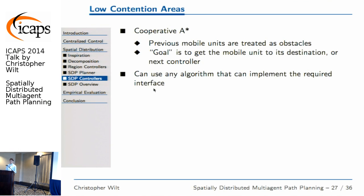The way cooperative A* works at a high level is the previous mobile units' paths are treated as obstacles in space and time. The other thing we had to do is expand the goal — the goal is not to reach a specific cell but to reach the next region, so any cell that gets the unit to the next controller is a good enough goal. We can use any algorithm that implements the interface with the two functions: can I accept this, and being told to accept it.